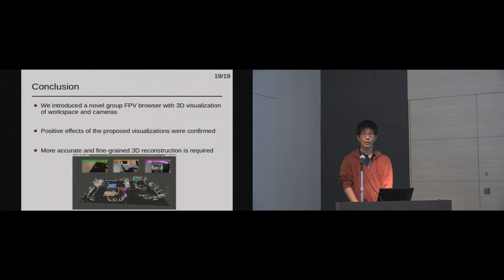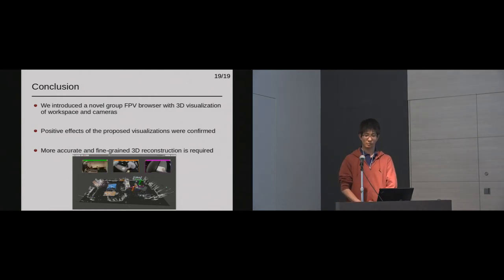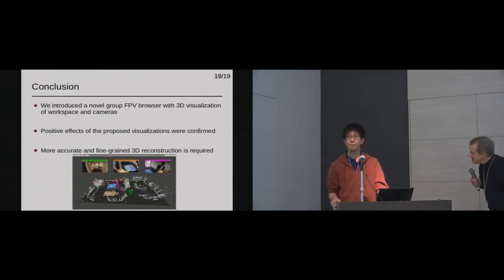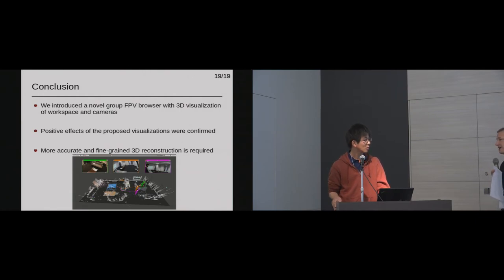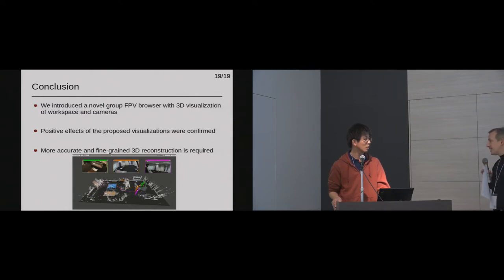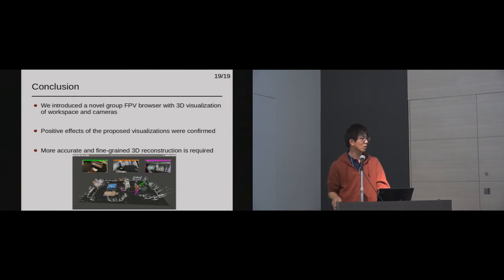Thank you very much for this good and on-time presentation. Are there questions in the audience? Please state your name and affiliation if you go to the microphone. Your user study shows that you are interested in analysis tasks — finding out relations between people. Did you think about increasing your toolkit by also providing aggregated views, like a heat map of the people, or trajectories displayed for a longer time, to get more insights already in the analysis tool — for example, a heat map showing where people were moving around over time?